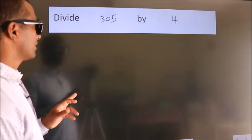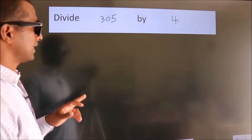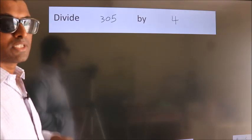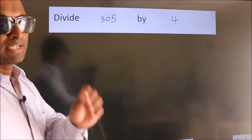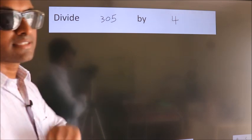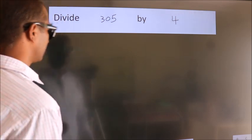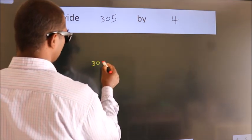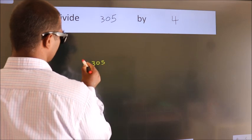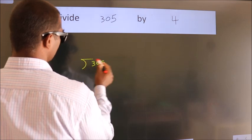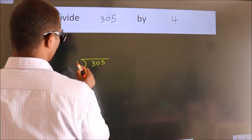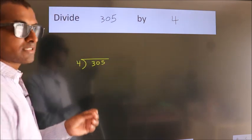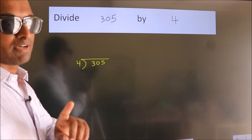Divide 305 by 4. To do this division, we should frame it in this way: 305 here, 4 here. This is your step 1.